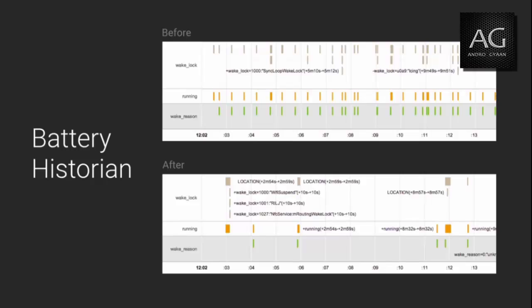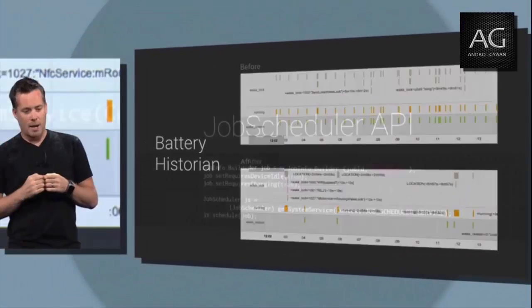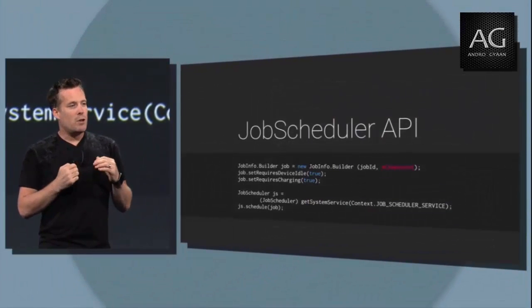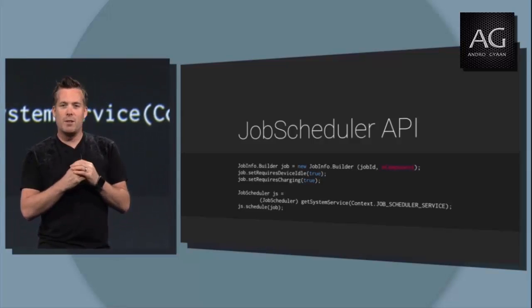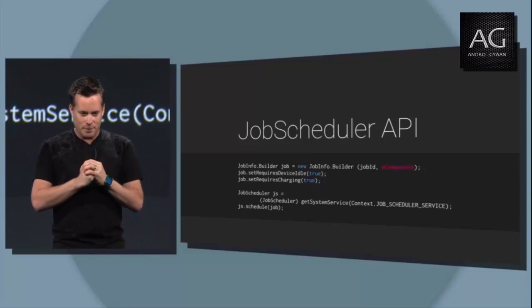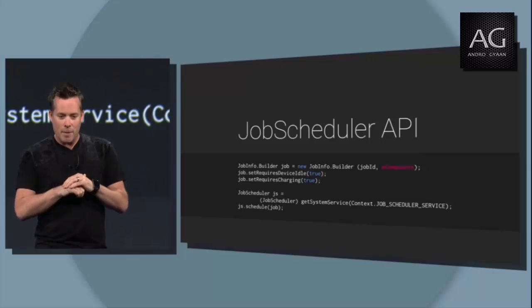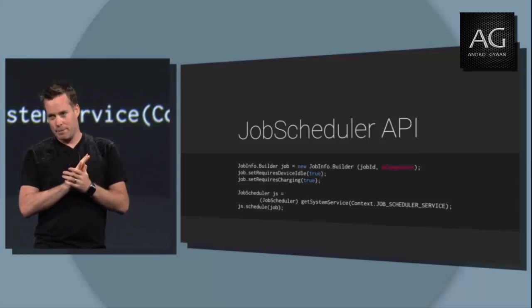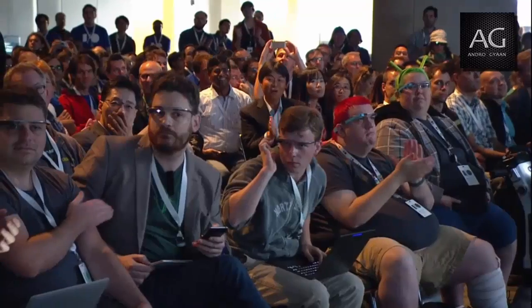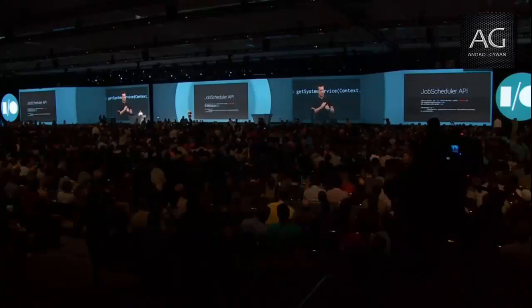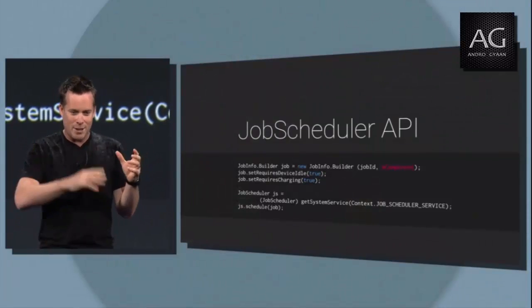We've also added a new Job Schedule API to help you optimize power consumption in your apps. Using the Job Schedule API, you can make your application more efficient by allowing the platform to coalesce non-urgent network requests from multiple apps. As a result, the platform can keep the radio asleep a higher percentage of the time, thus saving significant power. You can use the Job Schedule API to schedule maintenance tasks while the phone is connected to the charger, or to download application updates. I'm sure you've all had that experience where your battery's about 4% and then applications start updating themselves — no!